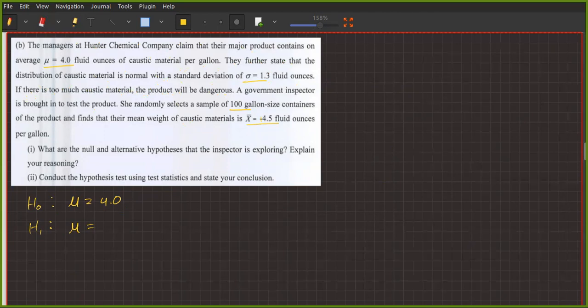The distribution of caustic material is normal. If there is too much caustic material, the product will be dangerous. So the alternative hypothesis is μ greater than 4.0.